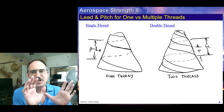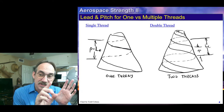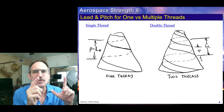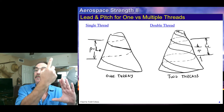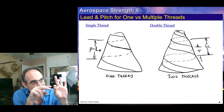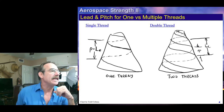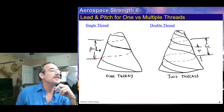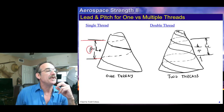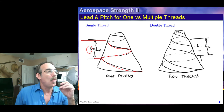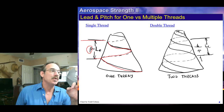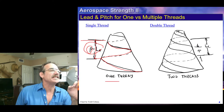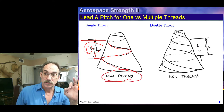Let's take a closer look at pitch and lead. Imagine a witch's castle on top of a mountain with a single road spiraling up to the top. The distance from the road at one point to where the road is in that same position again — after one full loop — is what we define as the pitch. Going around the mountain once is one rotation, so one rotation gets you one pitch forward. Therefore, the lead equals the pitch for a single-threaded bolt.